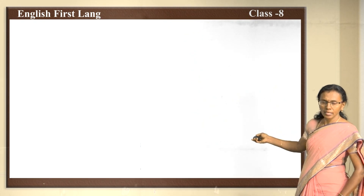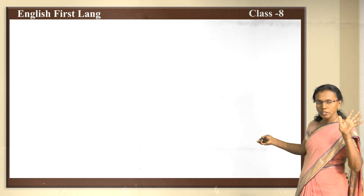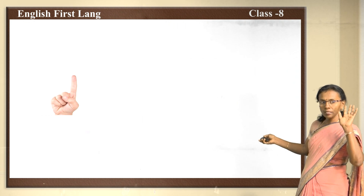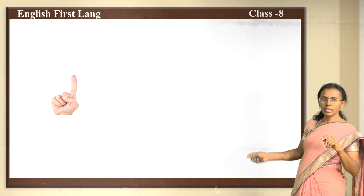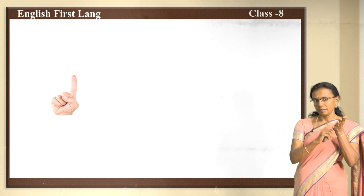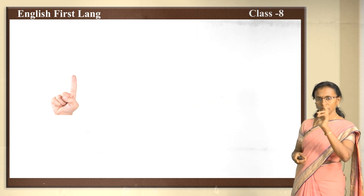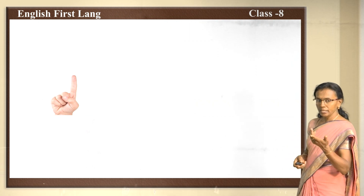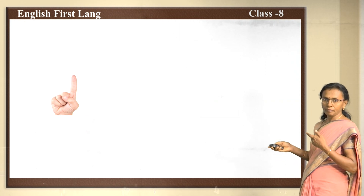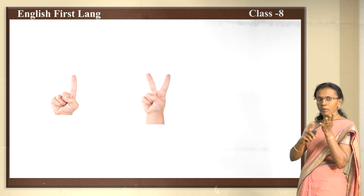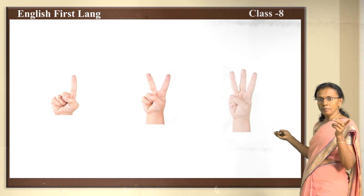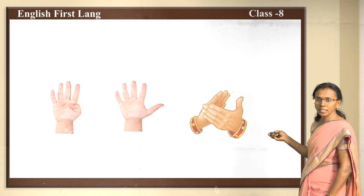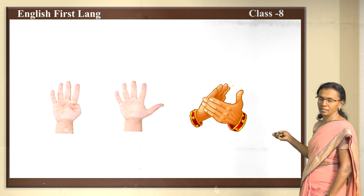Before going further, I ask you to show me your fingers. When I ask you to raise one finger, you have to raise one finger and start beating. When I show two fingers, you start with two fingers. As I show more, you go with increasing fingers — first one, second, third, fourth, fifth — and finally you start to clap.